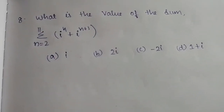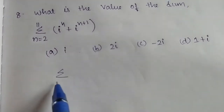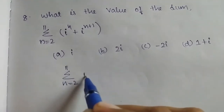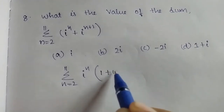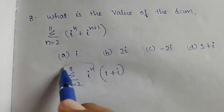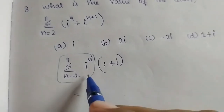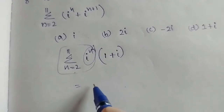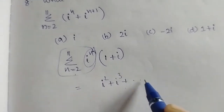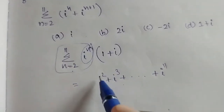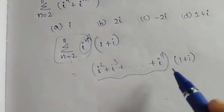Next question: find the value of the summation where n goes from 2 to 11. We need to compute the sum of i raised to n using the GP formula.